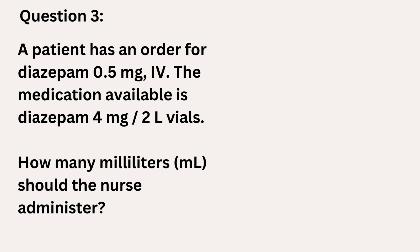Now we're going to do a third and final practice problem. This problem is more challenging than the previous two because not only did I list a medication, but this problem also has a conversion factor, so we're going to go through that together. The problem reads: a patient has an order for diazepam 0.5 milligrams IV. The medication available is diazepam 4 milligrams per 2 liter vials. How many milliliters should the nurse administer?